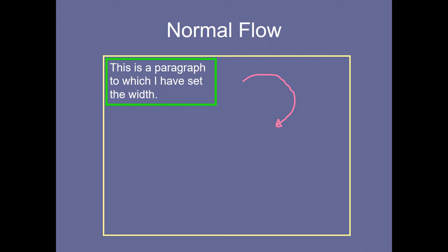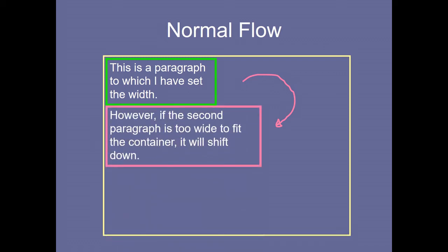Because it is not adjusting in that container, it will come to the next line — below the first paragraph — under the normal flow. In a big container you can adjust two or more contents together. If content goes beyond the container, it automatically comes to the next line below. This is the basic principle of normal flow.